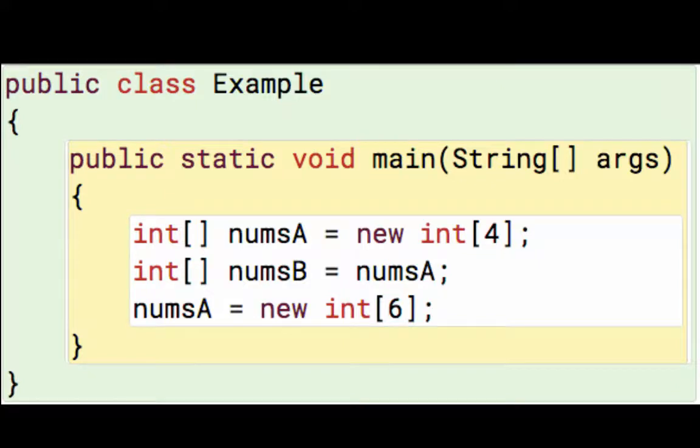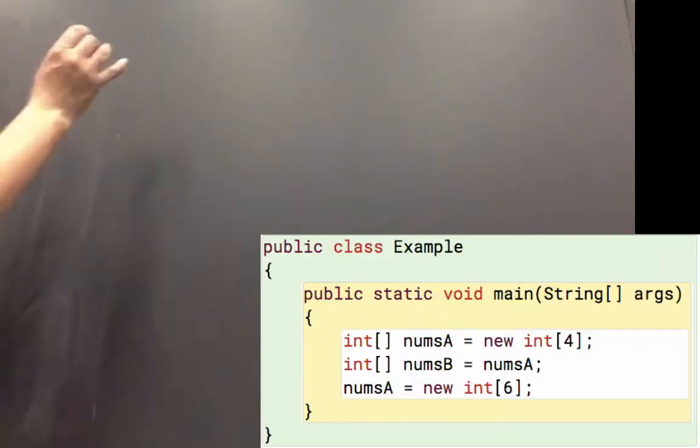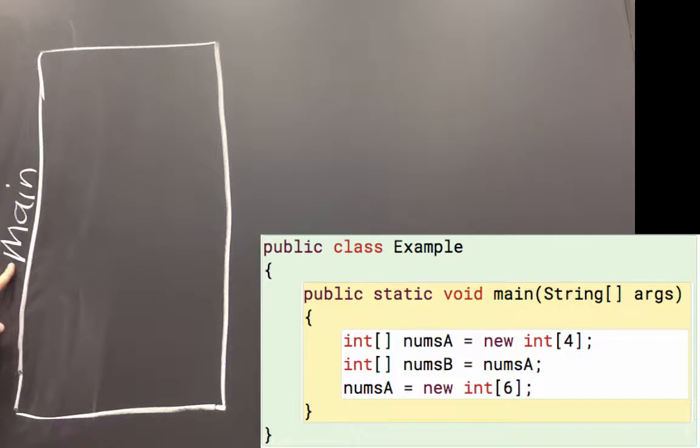Whenever we run our class, we run the method public static void main string square bracket args. I'll draw a stack frame to keep track of the local variables, and I wrote the name of the method main on the side.